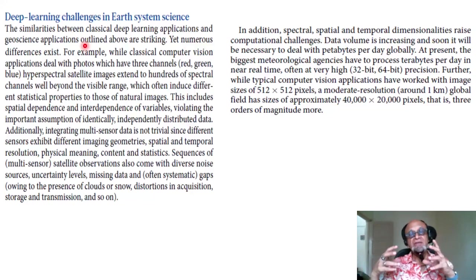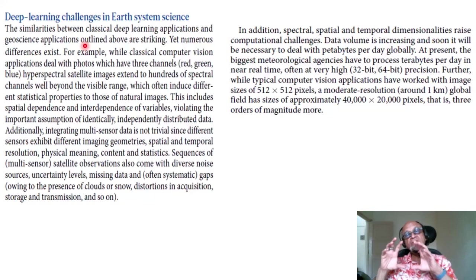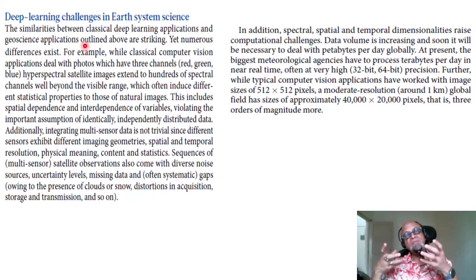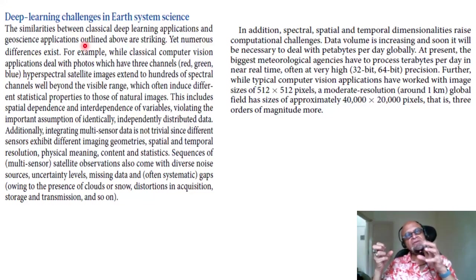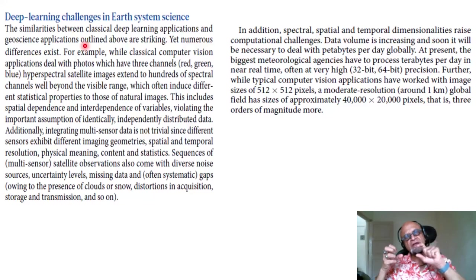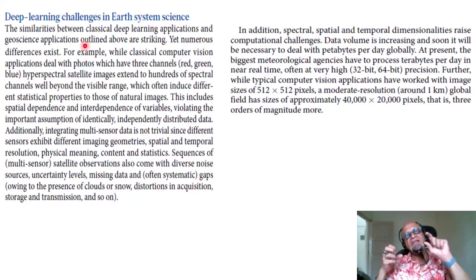A hurricane, for example, grows based on the heat content in the ocean. The heat content takes time to build up, but when the hurricane passes, it can chew it up very quickly. So as it keeps moving forward, you cannot just look at what exists now — you need to worry about the buildup as well.